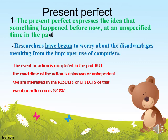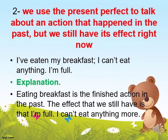We use the present perfect to talk about an action that happened in the past but we still have its effect right now. For example: I have eaten my breakfast, I can't eat anything more — I'm full. The action of eating breakfast is finished, but the effect remains: I am full and I can't eat anything more.